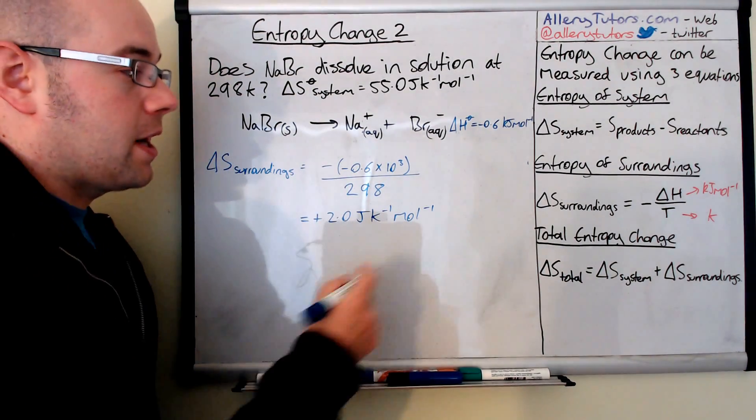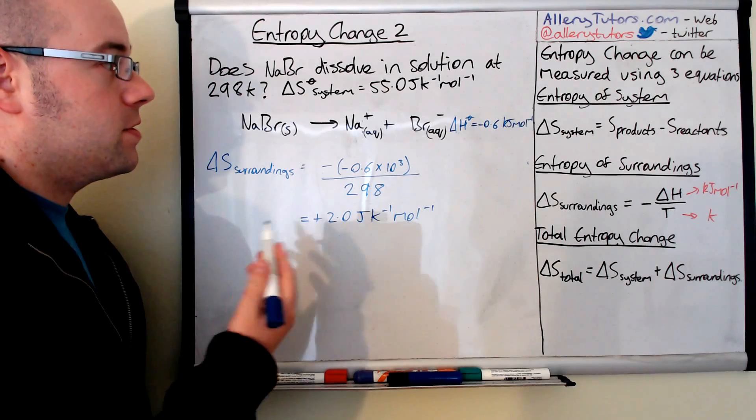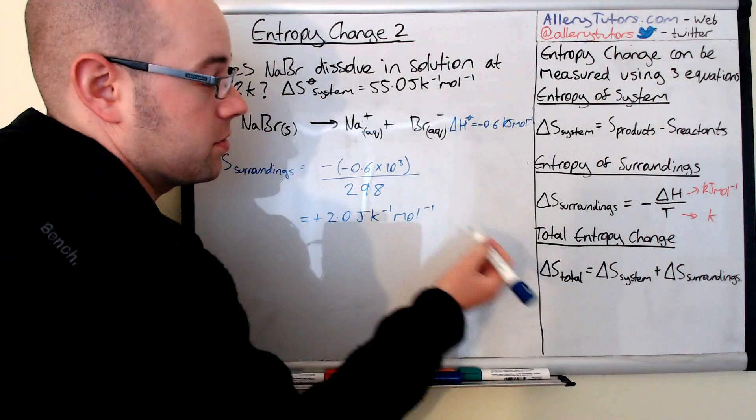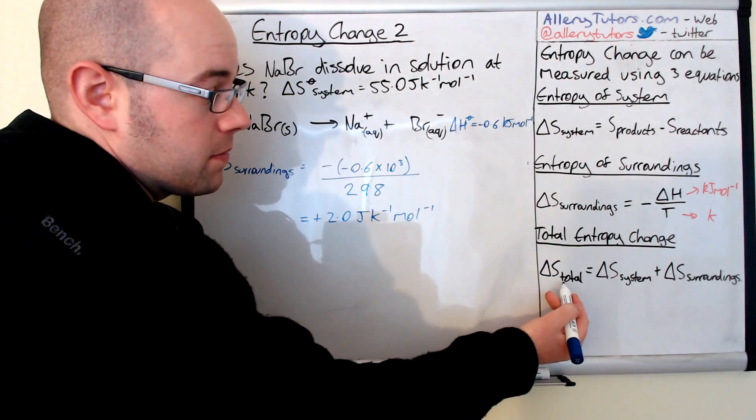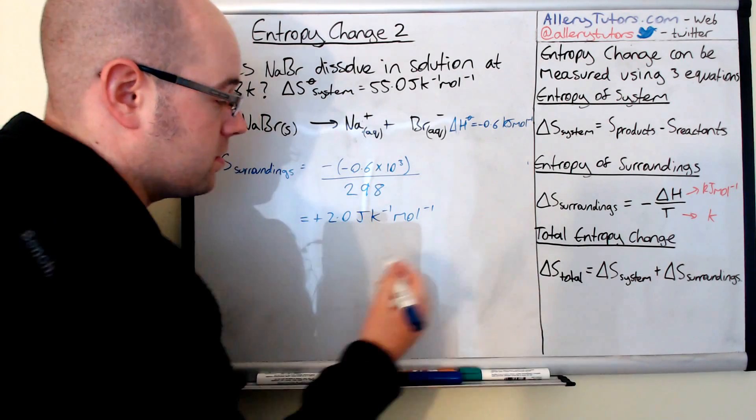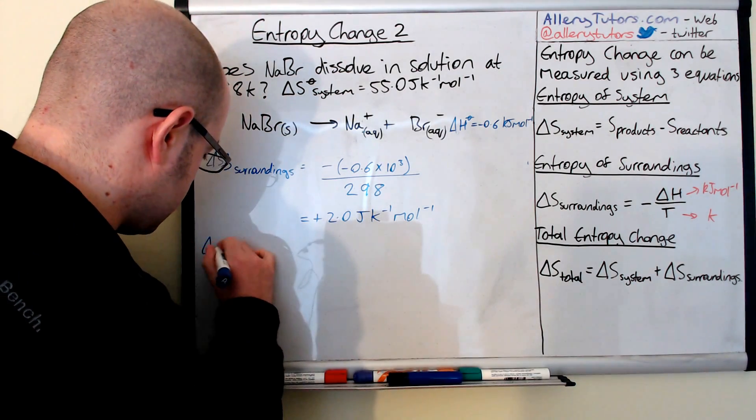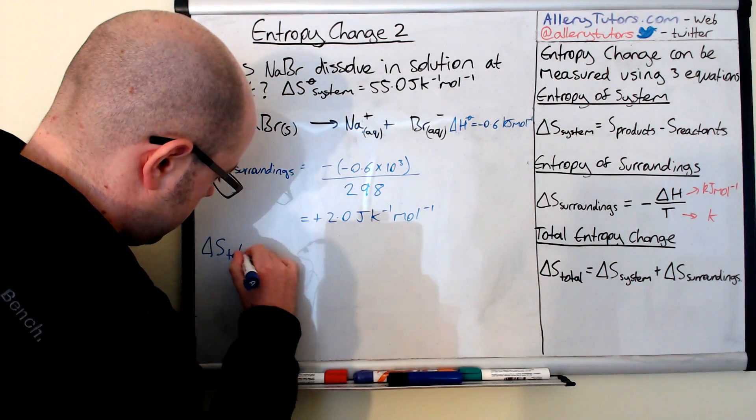Now we have to work out the total entropy change to see if this reaction is feasible, or to see if it will actually dissolve. We've got total is system plus surroundings. So I'll put this here: Delta S total.